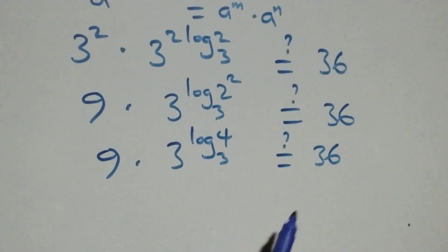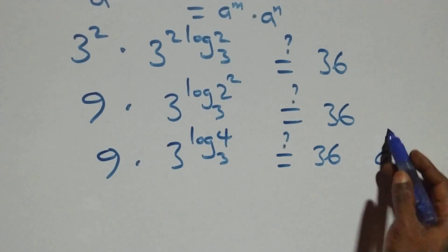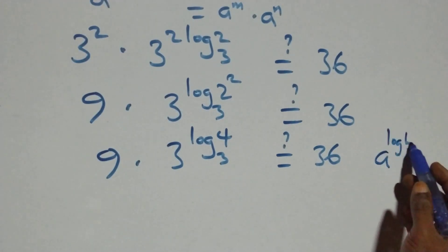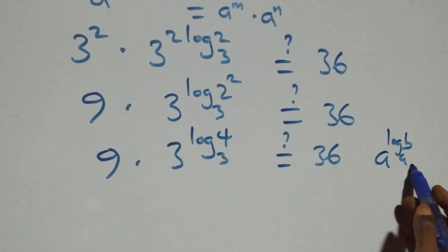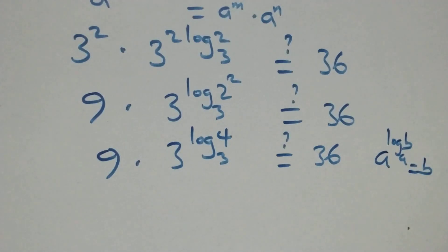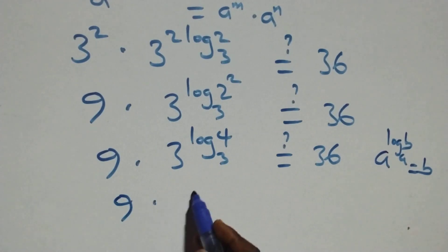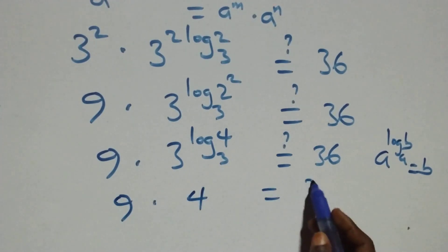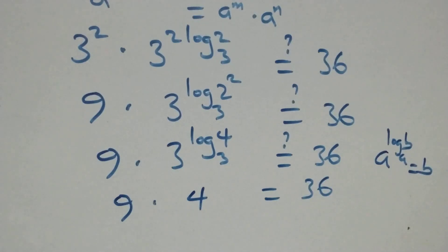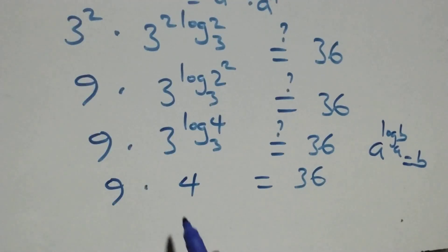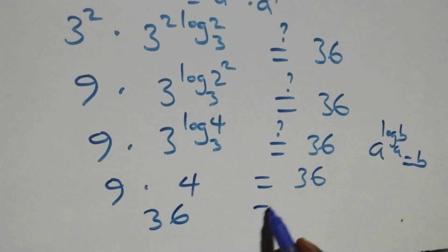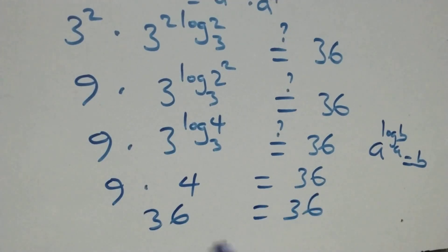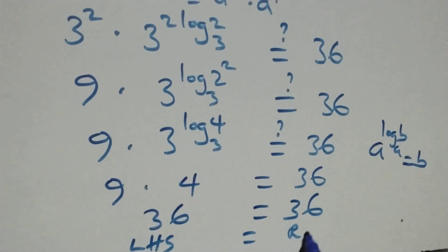Here we apply the identity: A raised to the power log B to base A equals B. So 3 raised to power log 4 base 3 equals 4. This gives us 9 times 4, which equals 36. And indeed 9 times 4 gives 36, so the left-hand side equals the right-hand side.